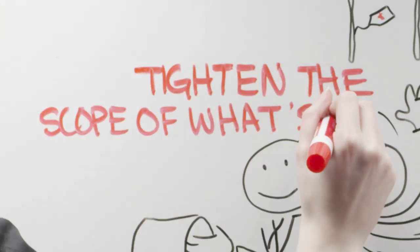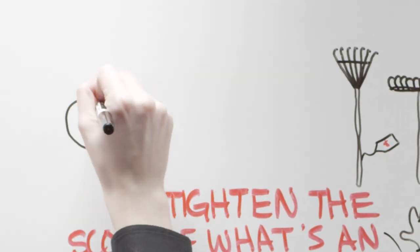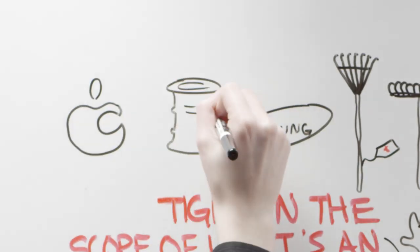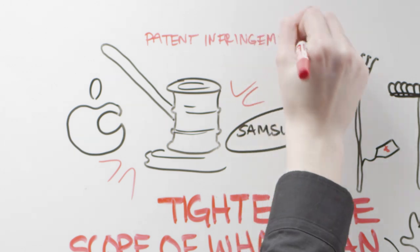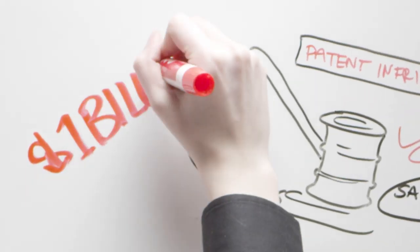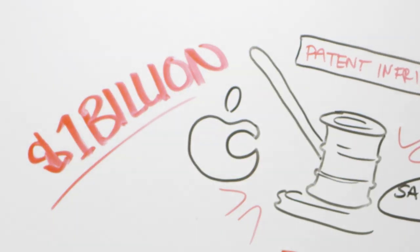Tighten the scope of what's an invention. Last year, Apple took Samsung to court, claiming Samsung ripped off the iPhone. Samsung lost and was ordered to pay Apple $1 billion, a number that's quickly being amended.